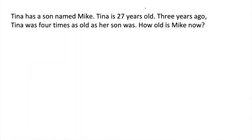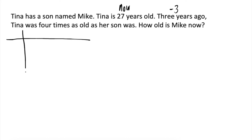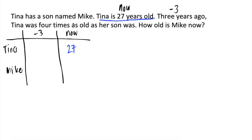Tina has a son named Mike. Tina is 27 years old. 3 years ago, Tina was 4 times as old as her son was. How old is Mike now? So, sa problem naman na ito, meron na tayong dalawang time elements — we have yung now and then 3 years ago, which we will write as negative 3. So, gumawa muna tayo ng table. Tina is 27 years old, isusulat natin dito 27. Since we don't know Mike's age, sulat natin ito as x. Now, let's complete the table.